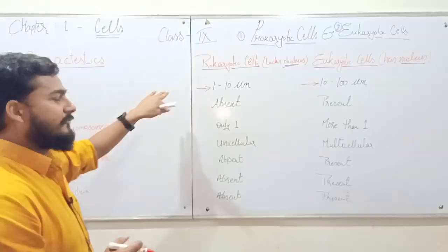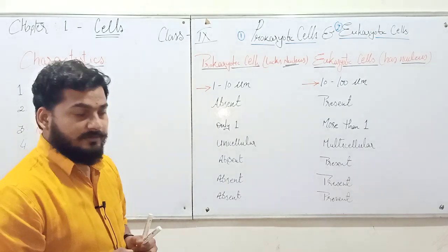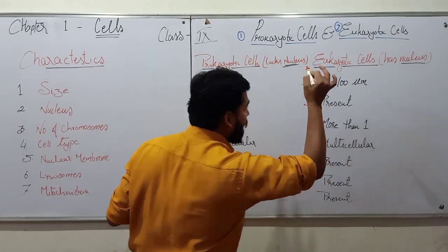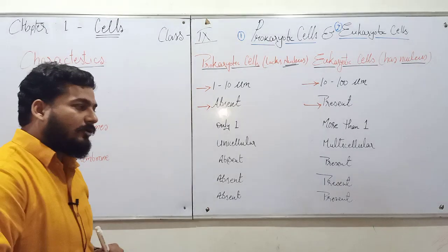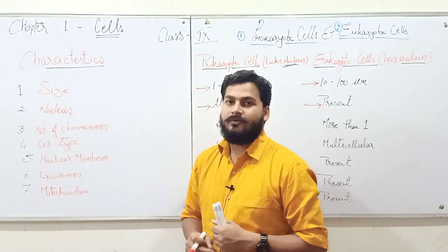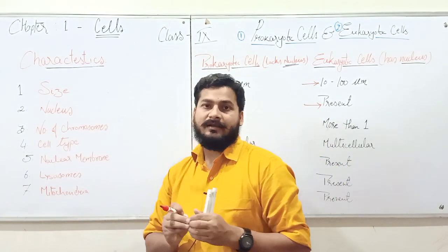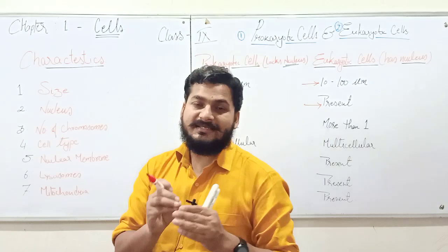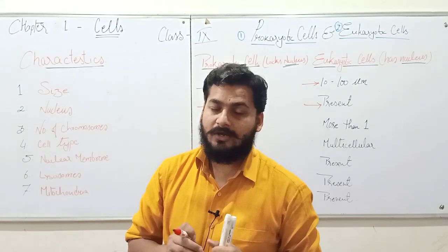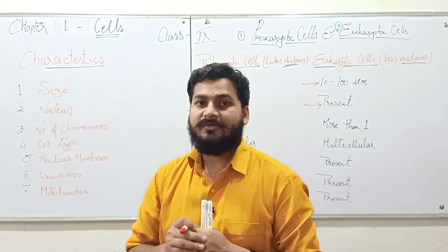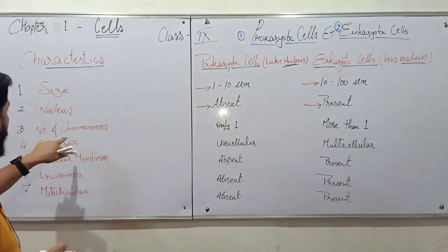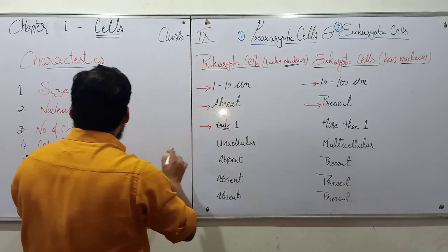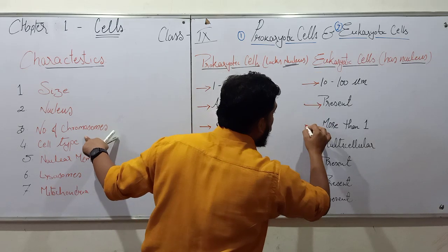Then we talk about nucleus: nucleus is absent in the case of prokaryotic cells and present in the case of eukaryotic cells. Then we talk about chromosomes. Chromosomes are X-shaped structures which basically bear the genetic material called genes or DNA — they are large collections of DNA or genes. The number of chromosomes in prokaryotic cells is only 1, and in eukaryotic cells it is more than 1.